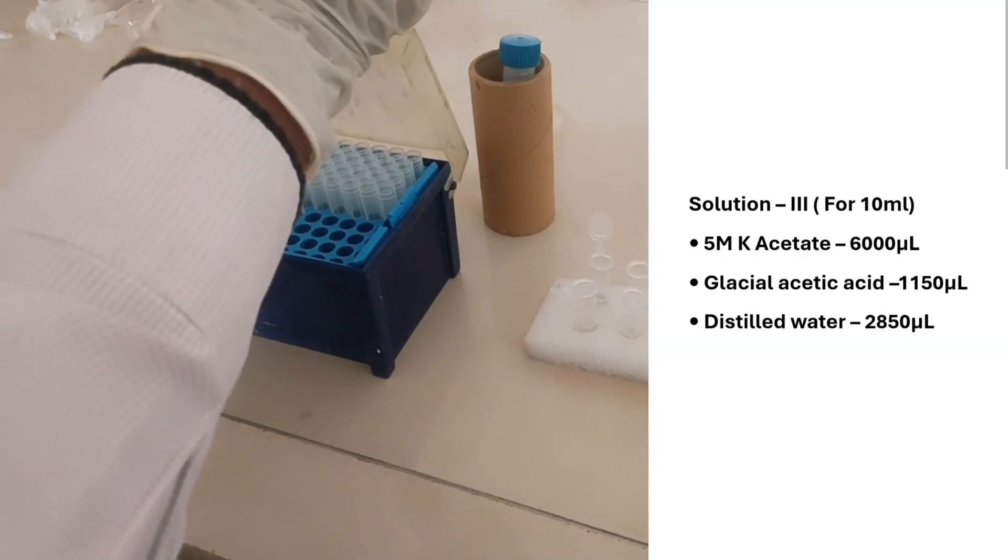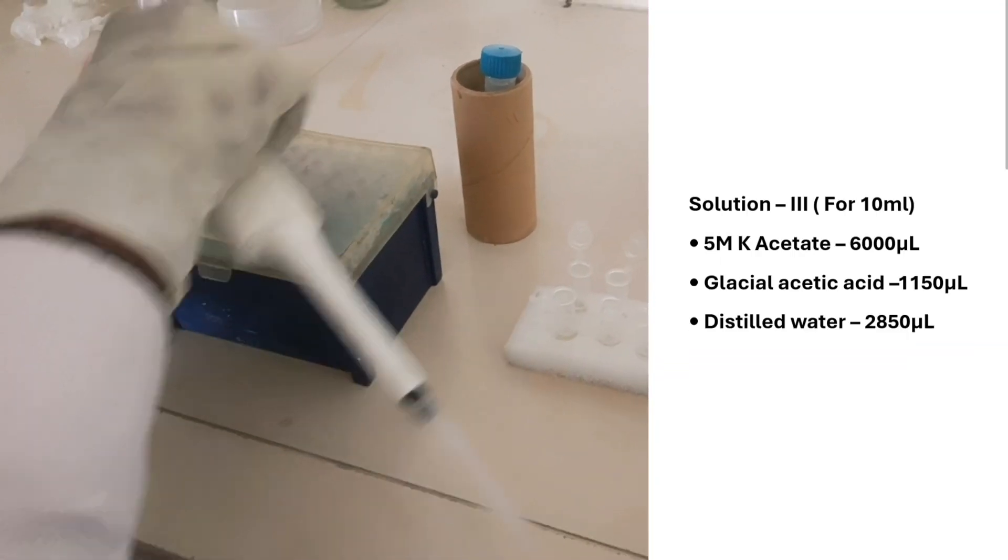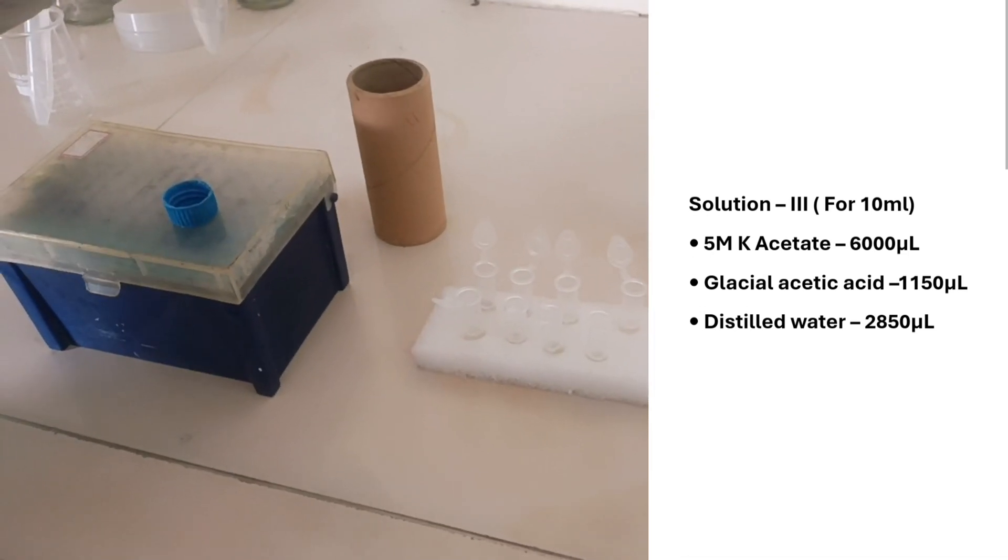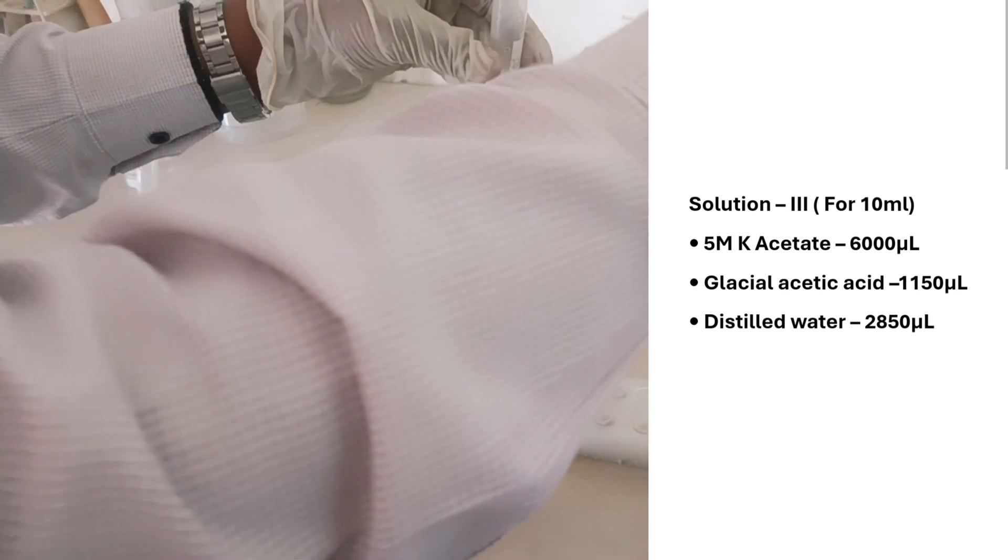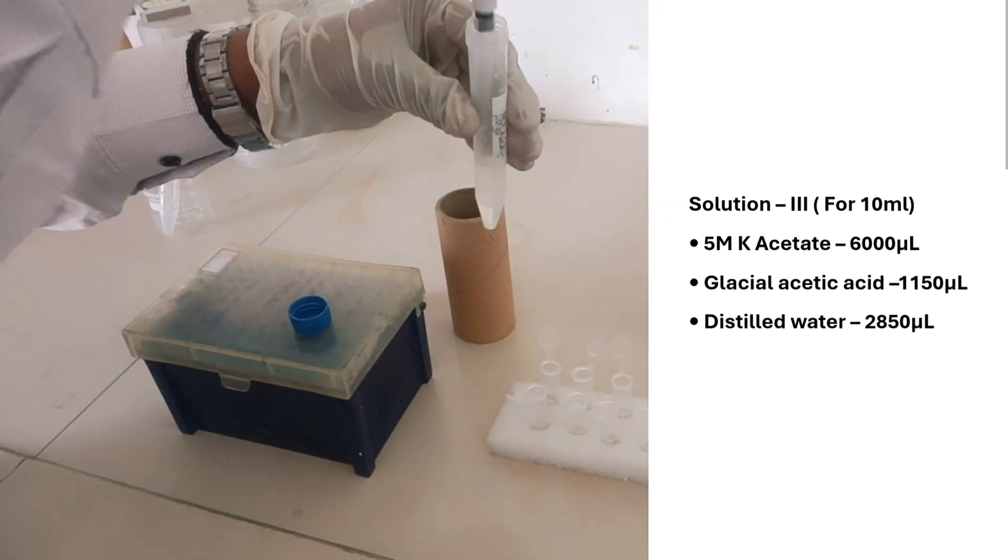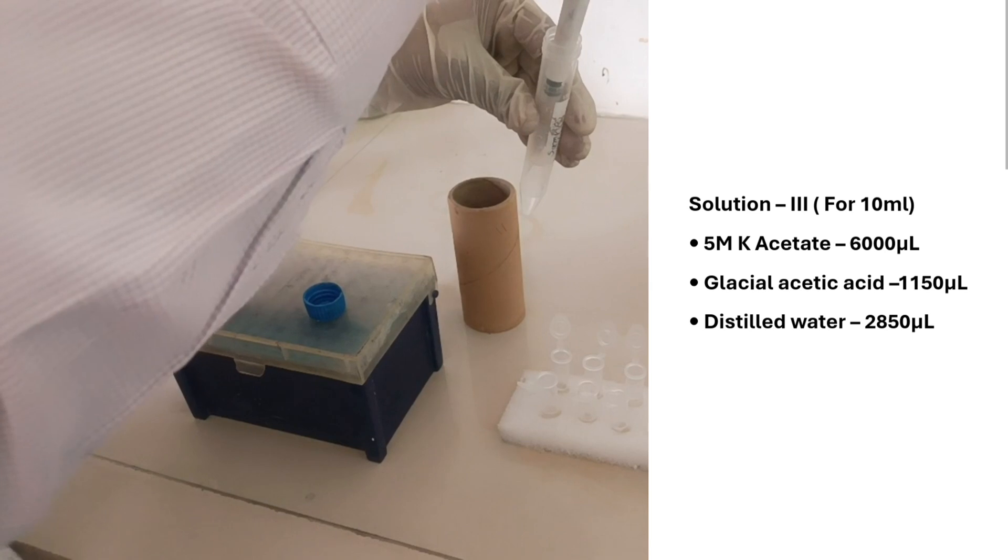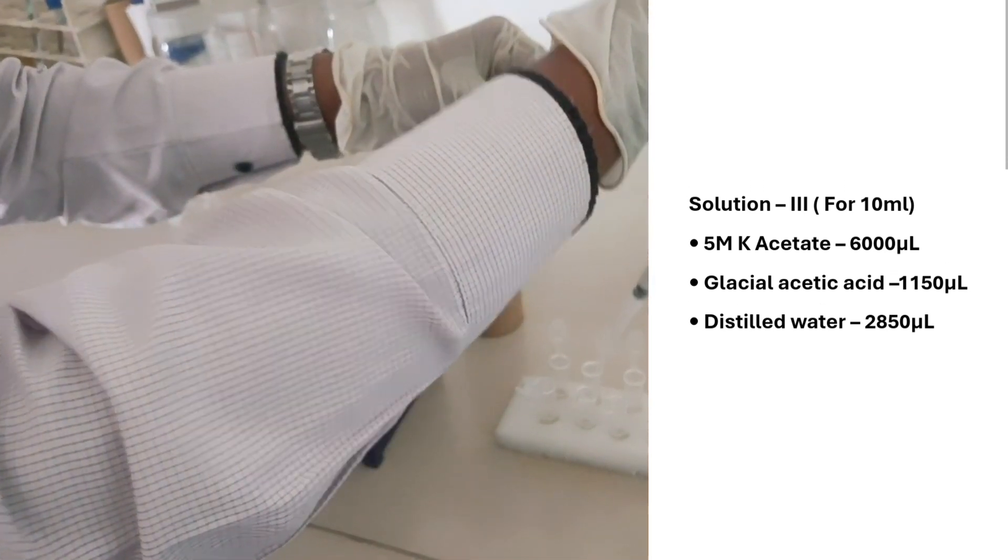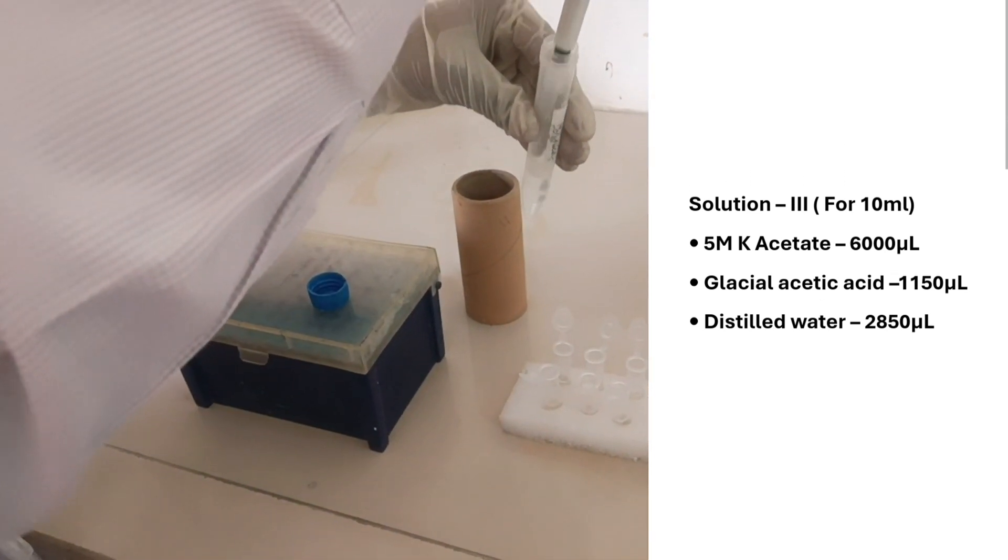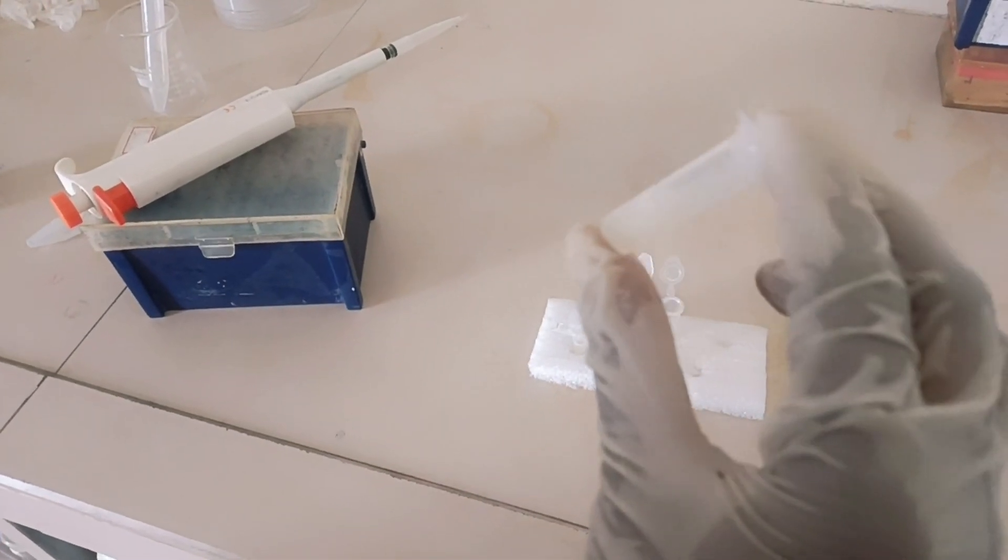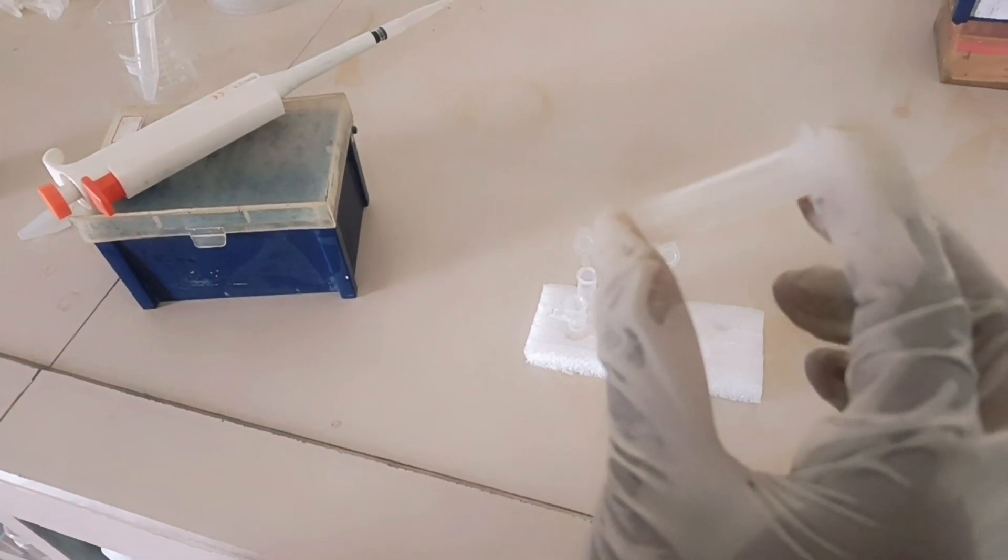We are going to add solution 3, 300 microliters in each tube prepared for 10 ml by adding 5M potassium acetate 6 ml, glacial acetic acid 1.5 ml, and distilled water 2.85 ml. After adding solution 3, again mix the tubes gently 4 to 5 times.